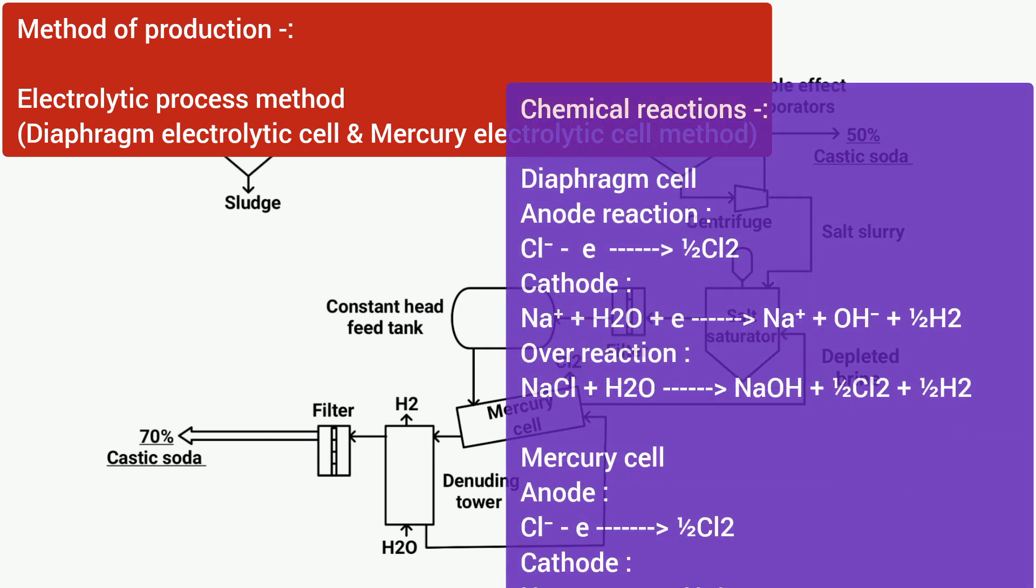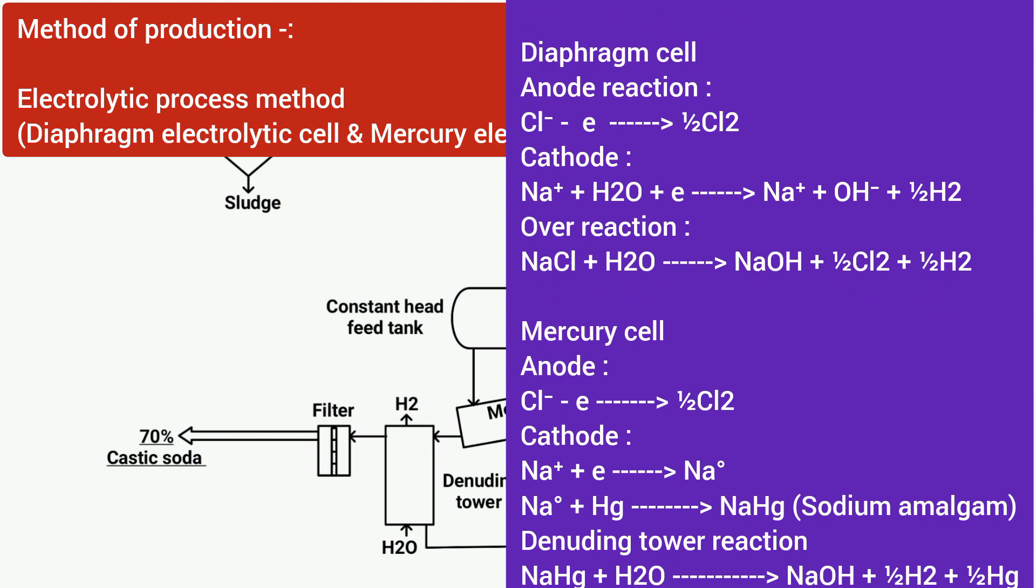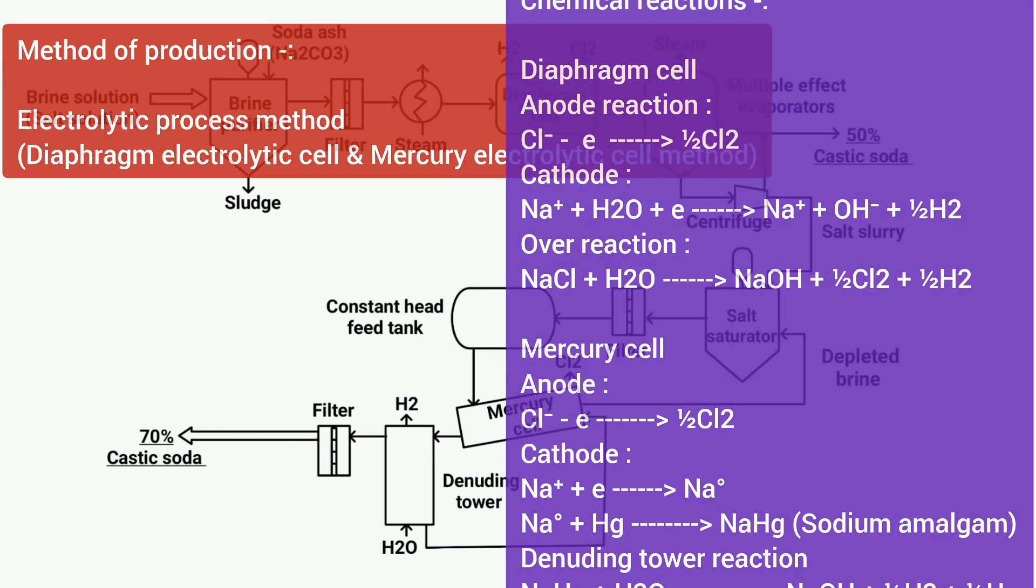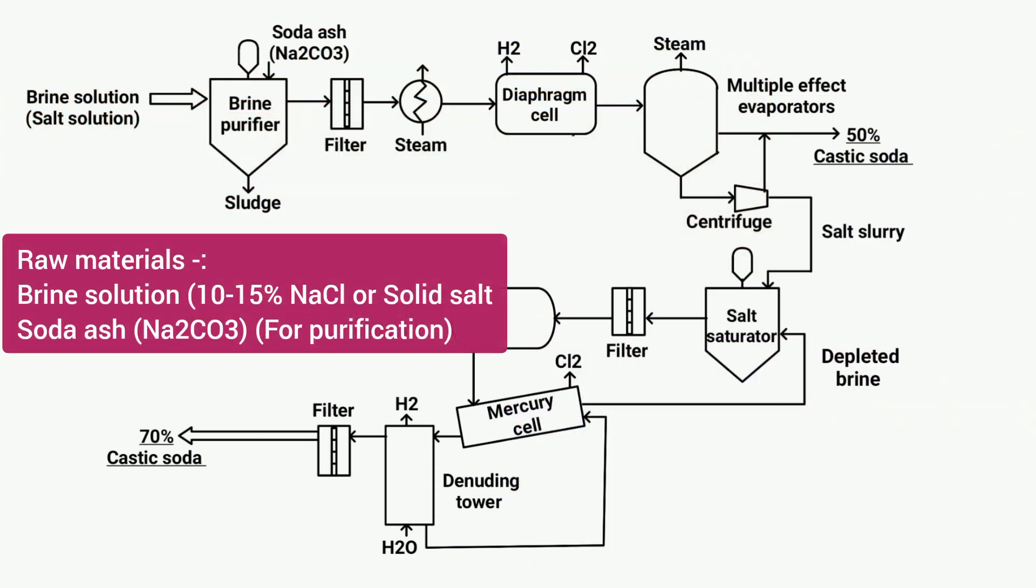And when caustic soda is produced through this method, the following reactions take place. Note them down as well. And for making caustic soda, brine solution, which should contain at least 10 to 15% salt, and soda ash is required for purification.